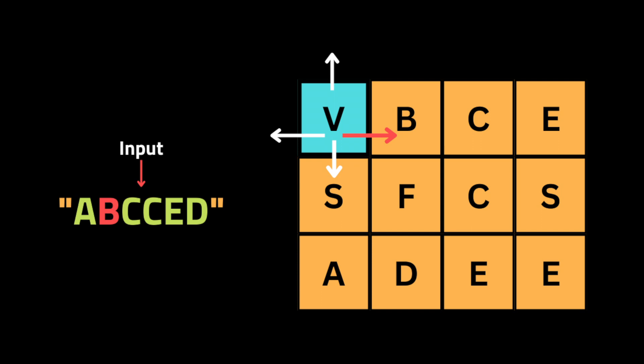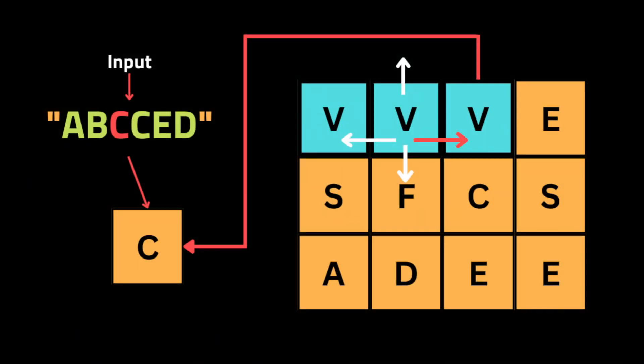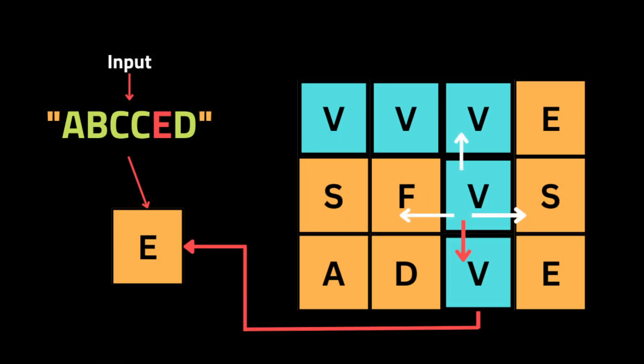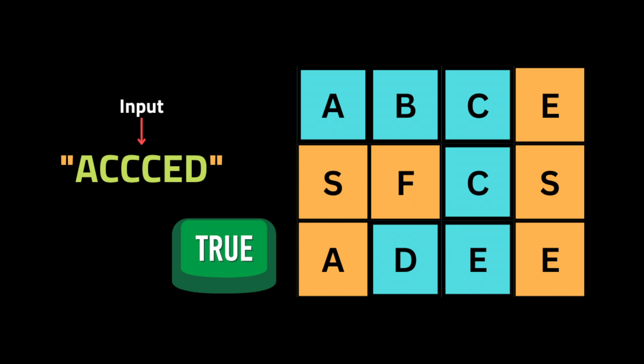The DFS function then makes a recursive call to search for the next character in the word, exploring all four cardinal directions: up, down, left, and right. We cannot go up or left because we'd be out of bounds, so we go right — and the function finds the letter we're looking for, marks it as visited, and moves to the next letter. Letters are found going right, then down, then down again, and finally left. After all recursive calls complete, DFS restores the original character in the board from cache and returns a boolean indicating whether a match was found — here, true.